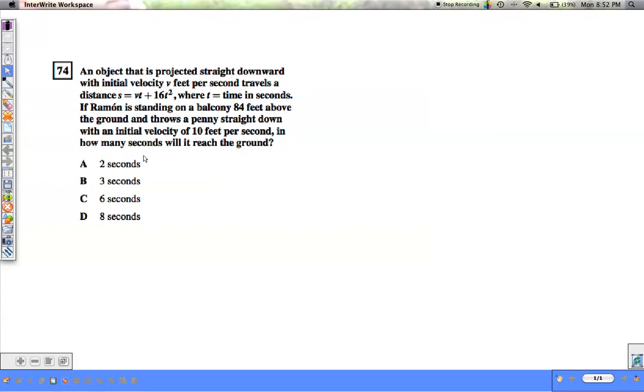This is an example of how to do number 74 on the CST Algebra Release Test Question Packet. In this problem, it states that an object is being thrown straight downward with an initial velocity v feet per second and it's going a distance s equals vt plus 16t squared. This formula is going to be very important to solving the problem.